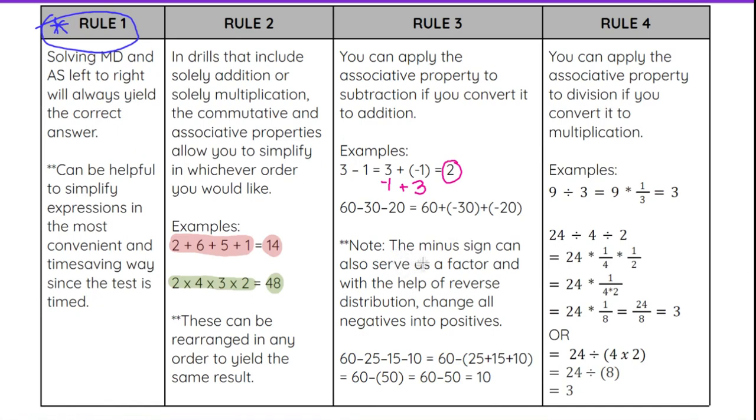Additionally, the minus sign can also serve as a factor with the help of reverse distribution. What that means is if I had an expression like 60 - 25 - 15 - 10, with all subtraction here, I could actually reverse distribute the negative to the 25, the 15, and the 10—the remaining numbers beyond the first number.